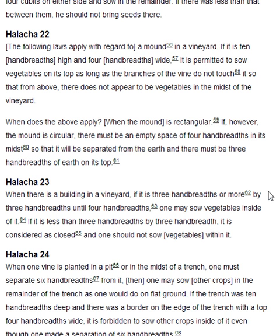Halakha 23. When there is a building in a vineyard, if it is three handbreadths or more by three handbreadths, until four handbreadths, one may sow vegetables inside of it. If it is less than three handbreadths by three handbreadths, it is considered as closed and one should not sow vegetables within it.